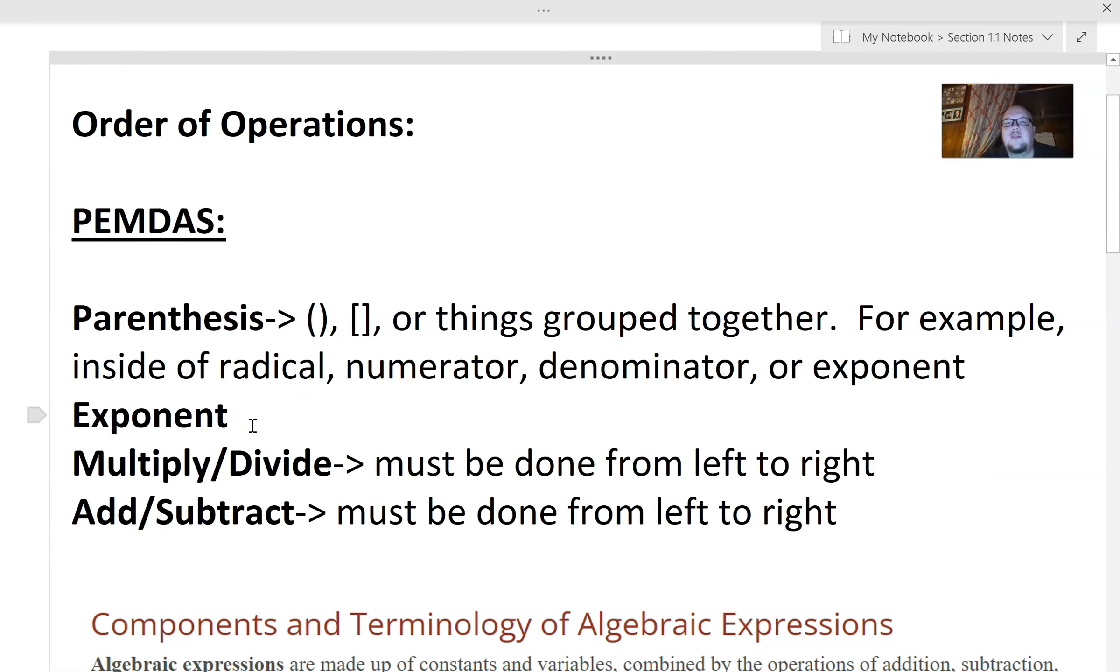Exponent. So remember with this, this means you have a base number and then your exponent is this little piece diagonally above it. And so with here, what this is saying is if you have something like three squared, well you're going to do three times three to get nine.